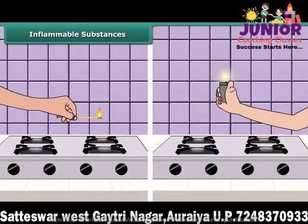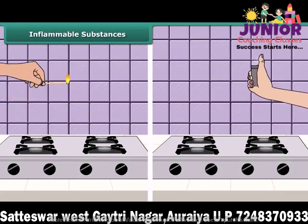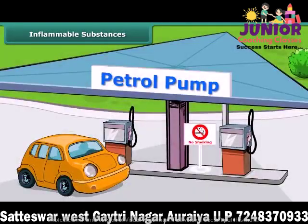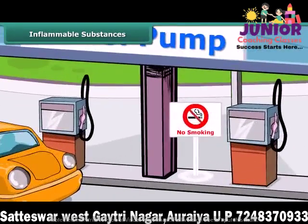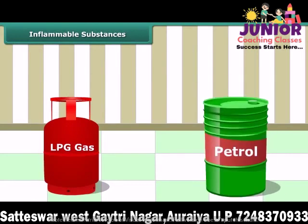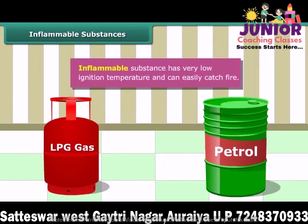Your mother would have told you to keep a burning matchstick or lighter away from the LPG gas stove in the kitchen, because LPG catches fire very easily. Similarly, you must have seen no-smoking signs at petrol pumps, because petrol also catches fire very easily and it is advisable not to smoke there. Substances like LPG and petrol are inflammable because they have a low ignition temperature, due to which they readily catch fire.